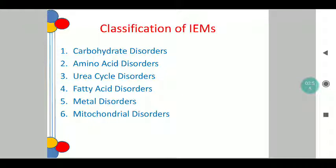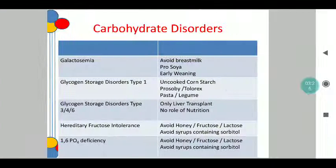Moving forward to the classifications of the inborn errors of metabolism, in simple terms we classify them as carbohydrate disorders, amino acid disorders, urea cycle disorders, fatty acid disorders, metal disorders, and mitochondrial disorders. I will list out a few disorders in each and speak only about the dietary aspect — I am not touching upon the clinical features at all. This presentation is purely focused only on the dietary approach.